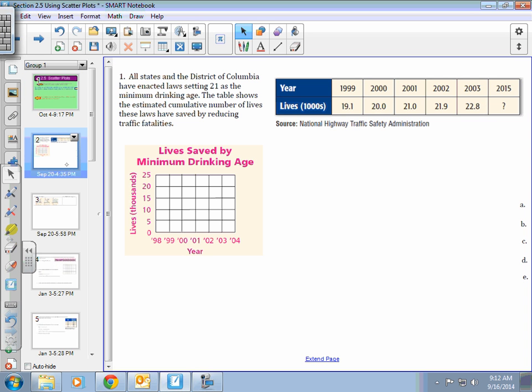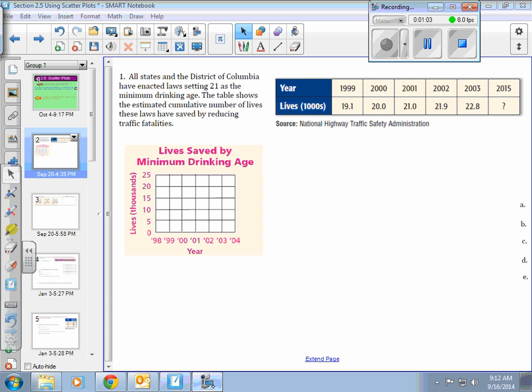All states and the District of Columbia have enacted laws setting 21 as the minimum drinking age. The table shows the estimated cumulative number of lives these laws have saved by reducing traffic fatalities. What we're going to do is plot the ordered pairs. 1999 from our table is our year on our x-axis, and the lives in thousands is on the y-axis. In 1999, it was 19.1.